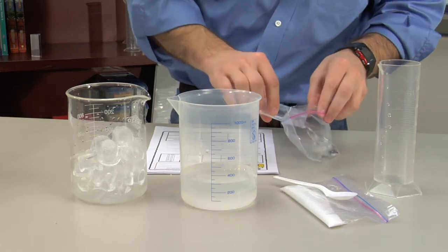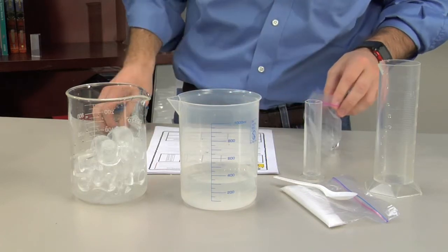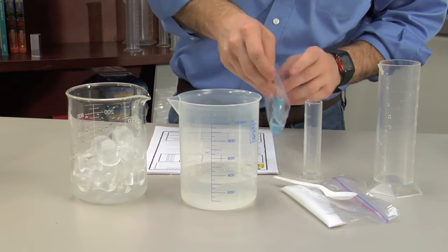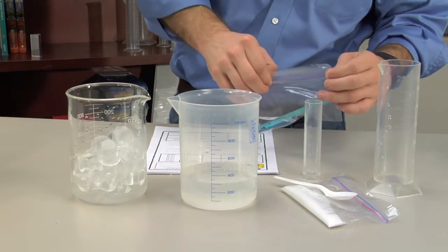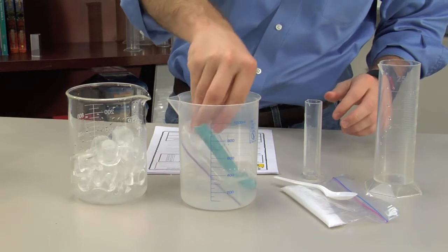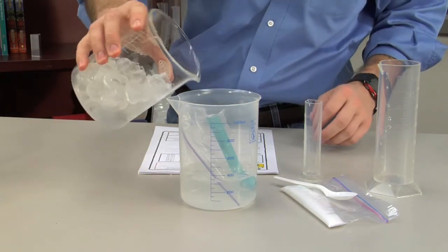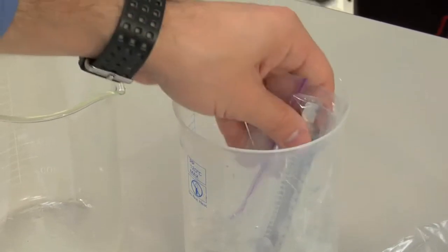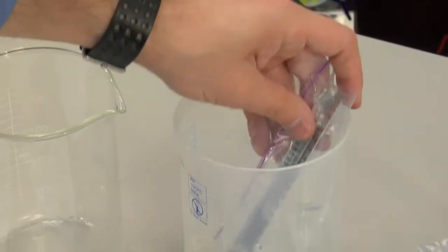Pour 5 to 10 milliliters of water into a small baggie. Insert a thermometer in the baggie and seal it. Place the baggie of water with the thermometer in the beaker and make sure it's covered with ice and salt. Have your students check the temperature over time and record these observations in their journals.